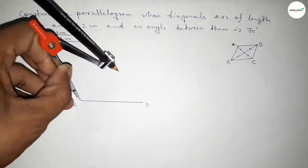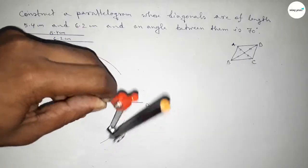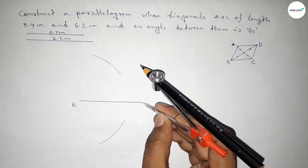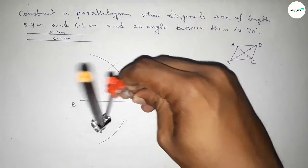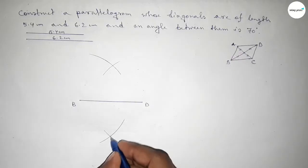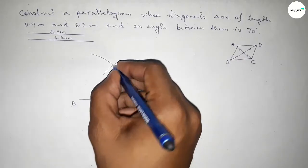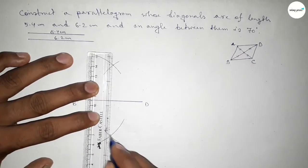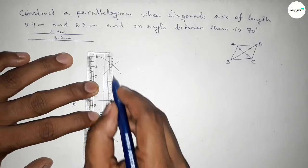So we have to bisect this line. Taking greater than half of the line and drawing arcs from both ends with the same length, cutting above and below. Both curves intersect at two points, and joining those points gives us the perpendicular bisector and the midpoint.